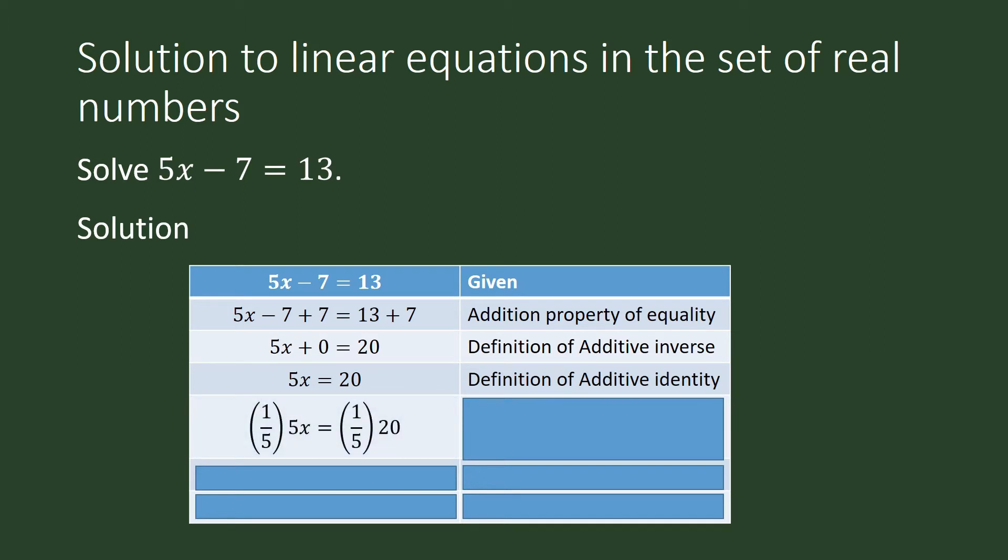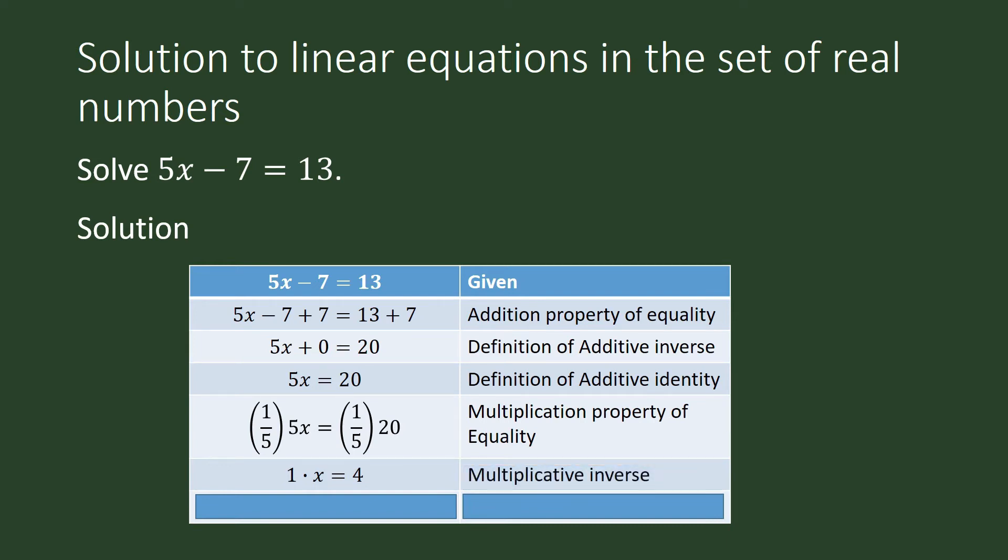Then we multiply 1 over 5 to both sides of our equation. Our reasoning for that is the multiplication property of equality. 5 times 1 fifth is 1. Multiplicative inverse. And x equals 4. Our definition of the multiplicative identity.